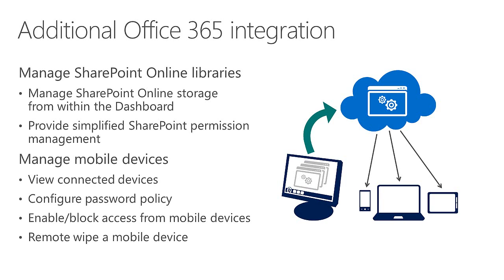For example, if a security issue comes up and mobile devices are being compromised, you can block certain brands or models from connecting to your environment until the security concern is resolved. Once everything is safe again, you can unblock those devices. This gives you more control over who's coming in remotely. And of course, you can do a remote wipe of mobile devices, which has long been available through Exchange ActiveSync capabilities.